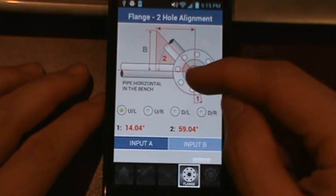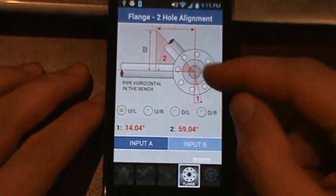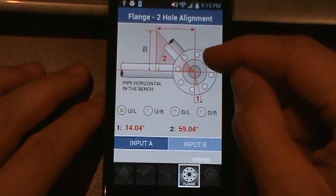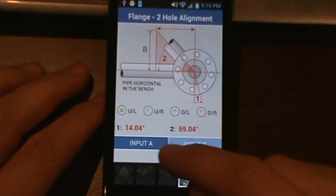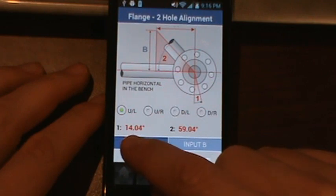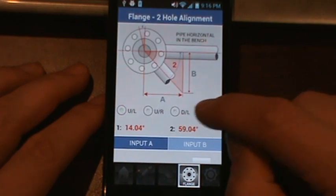Now in order to use this calculation you set your pipe horizontal on the bench to match the image, and then you set your pipe with your top two holes to be level. And then you're going to rotate your two hole 14 degrees in the direction of the arrow.